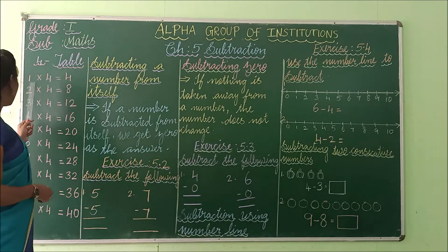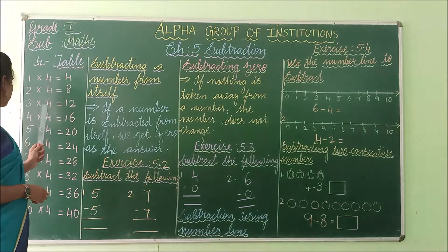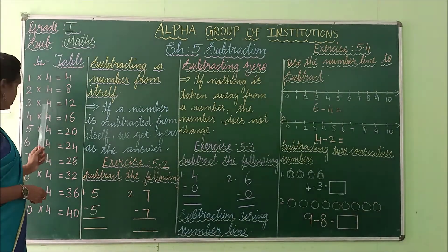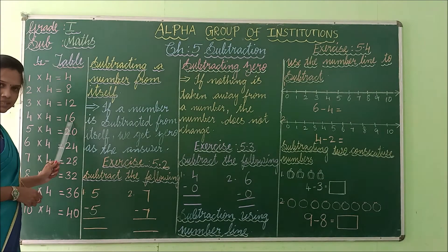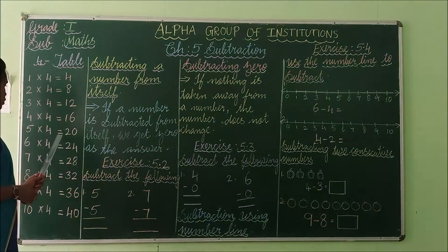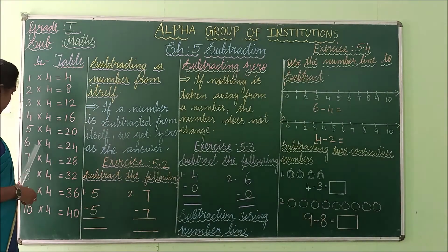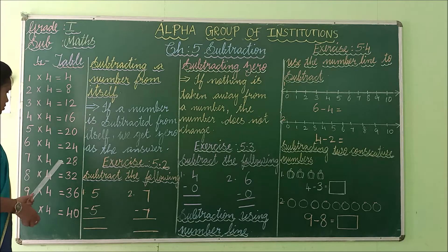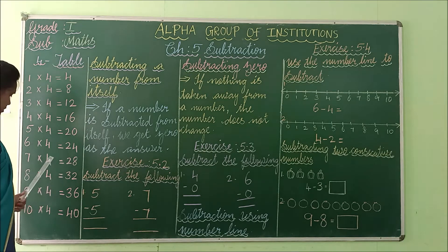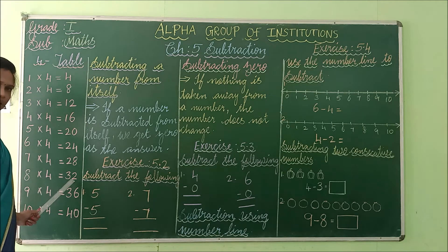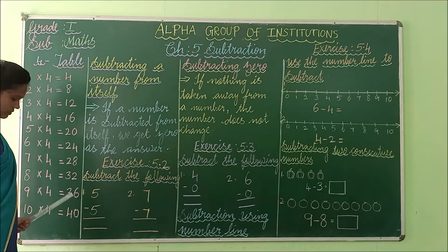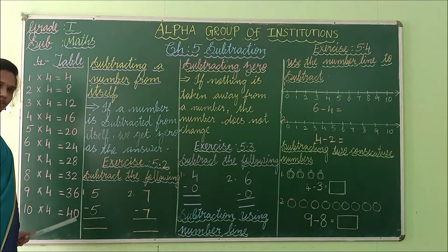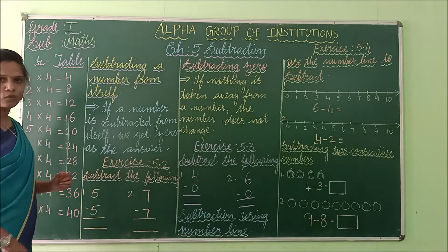1 four is 4. 2 fours are 8. 3 fours are 12. 4 fours are 16. 5 fours are 20. 6 fours are 24. 7 fours are 28. 8 fours are 32. 9 fours are 36. 10 fours are 40. Shall we recall for a second, children?